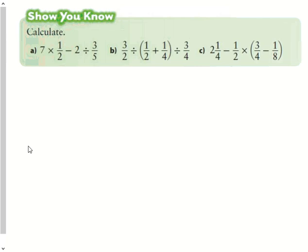All right, this is section 6.6 in our MathLinks 8 textbook, Applying Order of Operations to Fractions. So we have three examples here. We're just going to do A and C, and the methodology for all of them is always going to be the same.